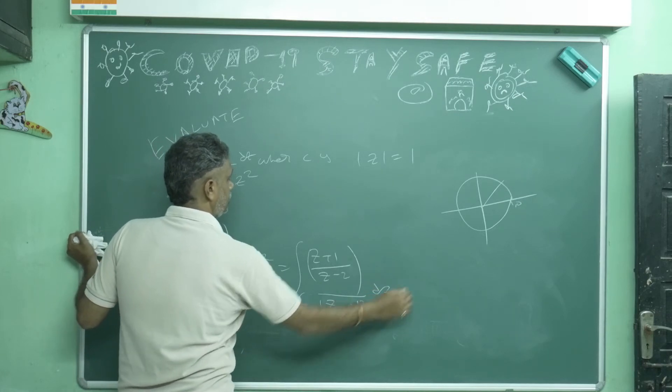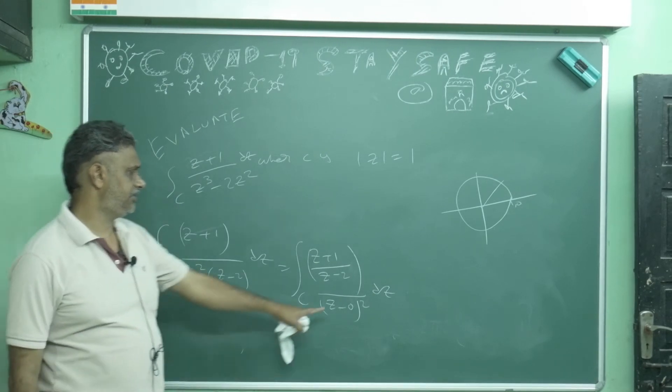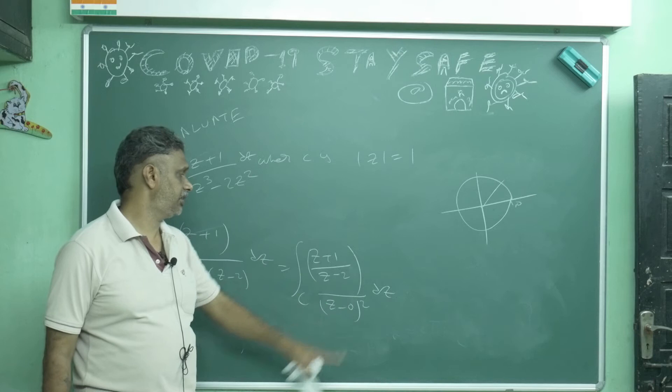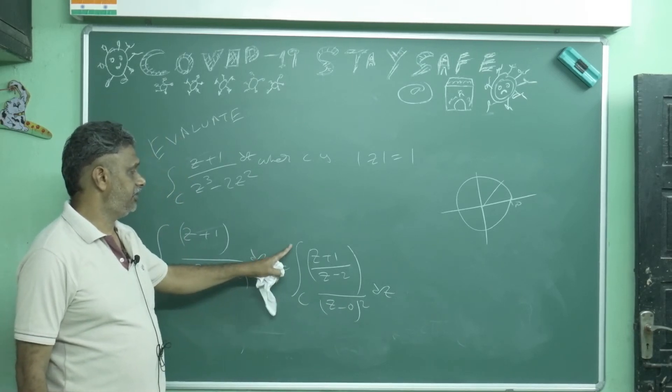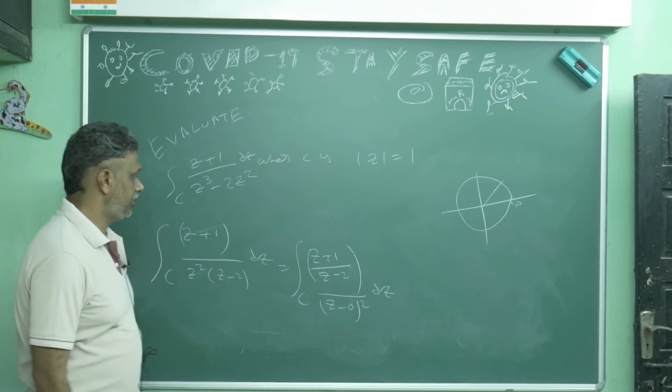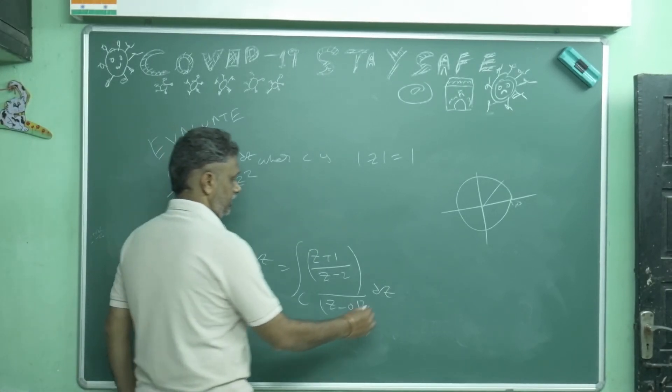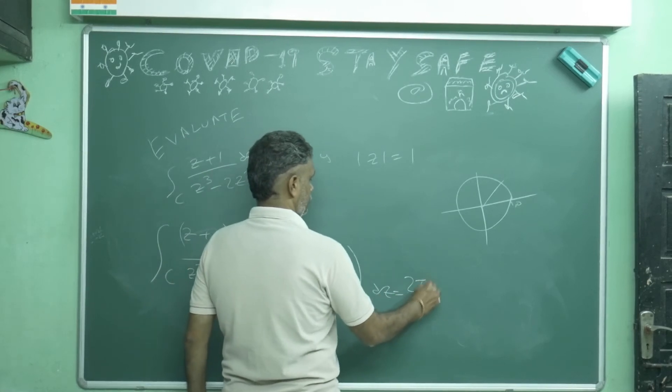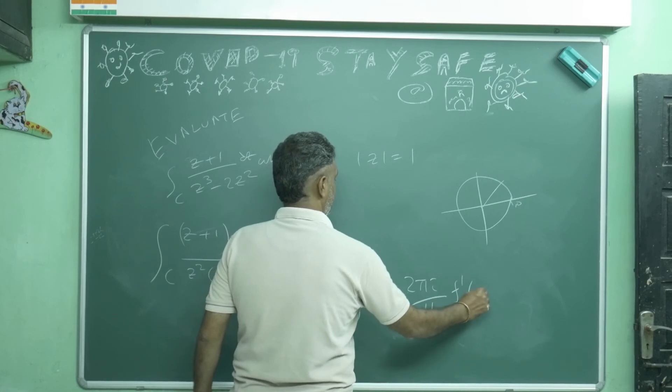You will get pole of order 2. If 1 by 2π i is not there, you can multiply by 2π i. Zero is inside the contour. Okay, this problem I can write as 2π i by 1 factorial times f dash of 0.